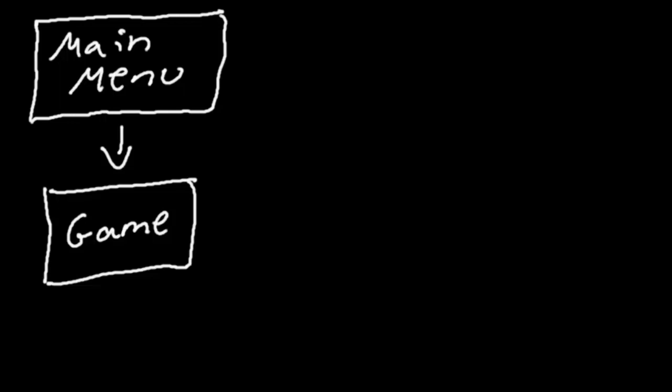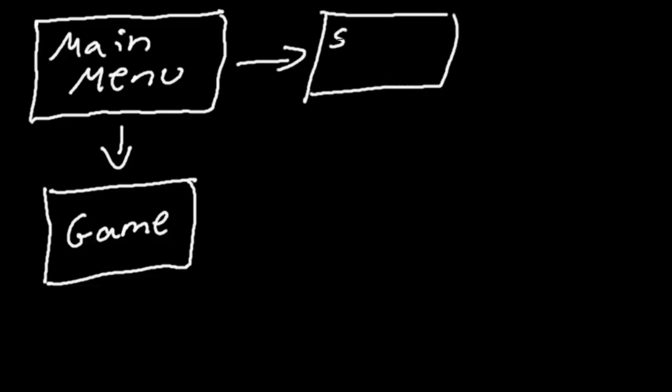If they're on the main menu and they click the settings button, then we want to make the main menu disappear and bring them to a new menu, which is going to allow them to change all the settings of the game, such as whether they want to hear music or not, maybe how many frames per second they want to run the game. So the main menu has two options: start and settings. If they press start, we bring them to the game. If they press settings, we bring them to the settings menu.